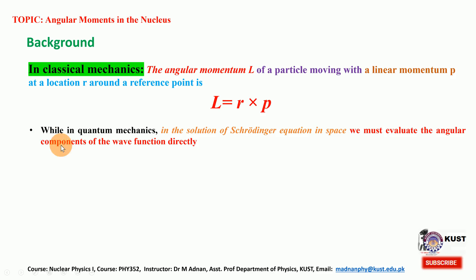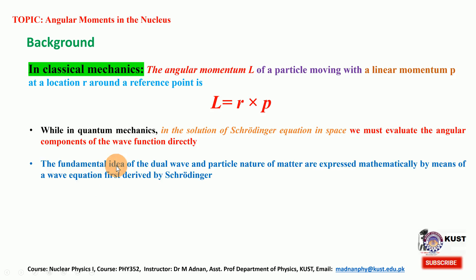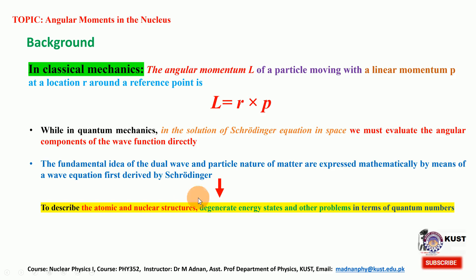In quantum mechanics, in the solution of the Schrödinger equation in space, we must evaluate the angular components of the wave function directly. The fundamental idea of the dual wave and particle nature of matter is expressed mathematically by the wave equation first derived by Schrödinger. This equation describes atomic and nuclear structures, and the subatomic particles and their degenerate energy states are described in terms of quantum numbers.